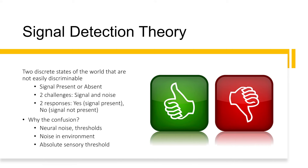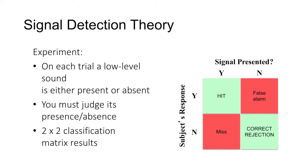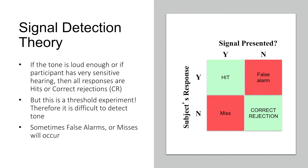Additionally, stimuli presented close to the sensory thresholds lead to false alarms and misses. A signal detection experiment might look something like the following: on each trial, a low-level sound is either present or absent, and you must judge its presence or absence. There are four options in this 2x2 matrix: hit, miss, false alarm, and correct rejection. A hit is when you accurately identify that the signal is there. A miss is when the signal is present and you don't identify it. A false alarm is when you think the signal's there but it's not actually there. And a correct rejection is when there is no signal and you correctly identify that. If the tone is loud enough, or the participant has very sensitive hearing, then all responses would be a hit or a correct rejection, but because of threshold variability and the influence of noise, there will be misses and false alarms.